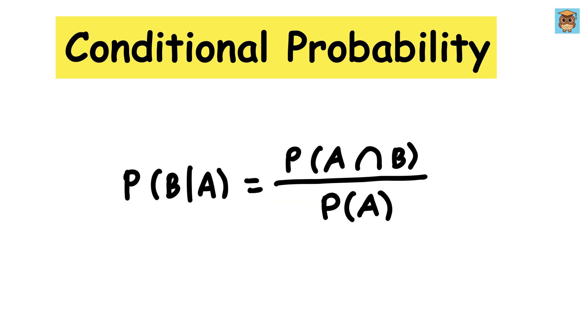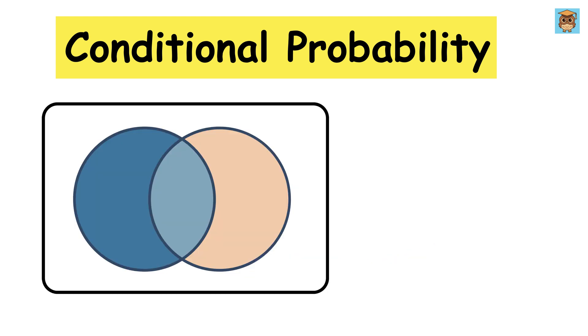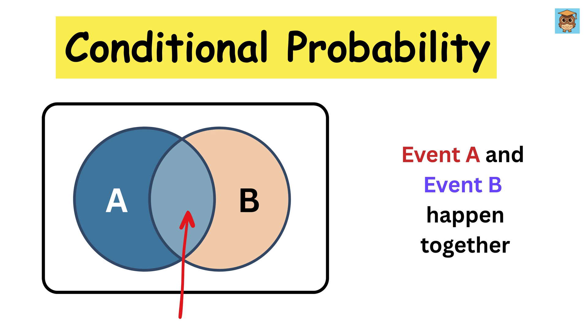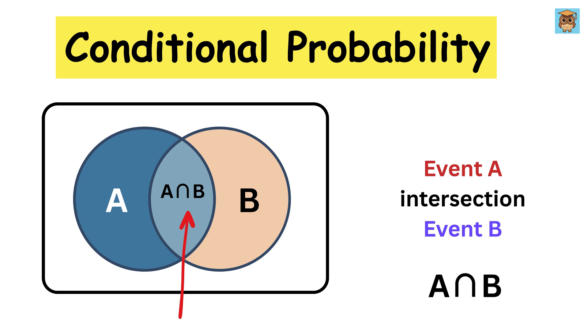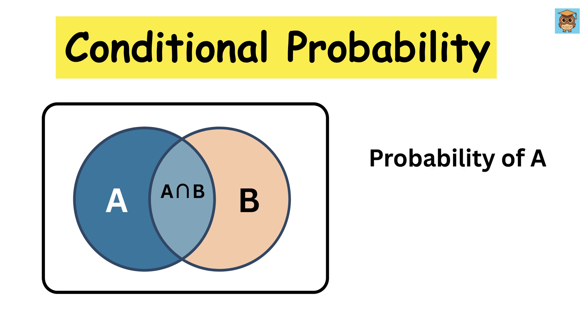Awesome! So now that we understand what conditional probability means, let's explore the formula behind it. Picture a Venn diagram. Imagine two overlapping circles: one for event A, which tells that event A has occurred, and one for event B, which tells that event B has occurred. The overlapping area, or this region, represents the cases where both A and B happen together, and we call it event A intersection with event B.